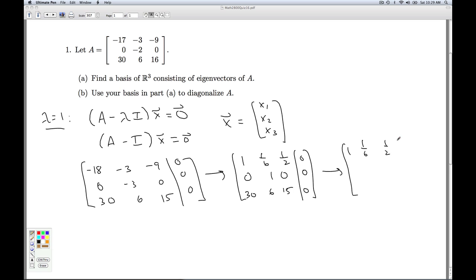1, 1/6, 1/2, 0, 0, 1, 0, 0, multiply by negative 30 and add. And then I can multiply by negative 1/6 and add.